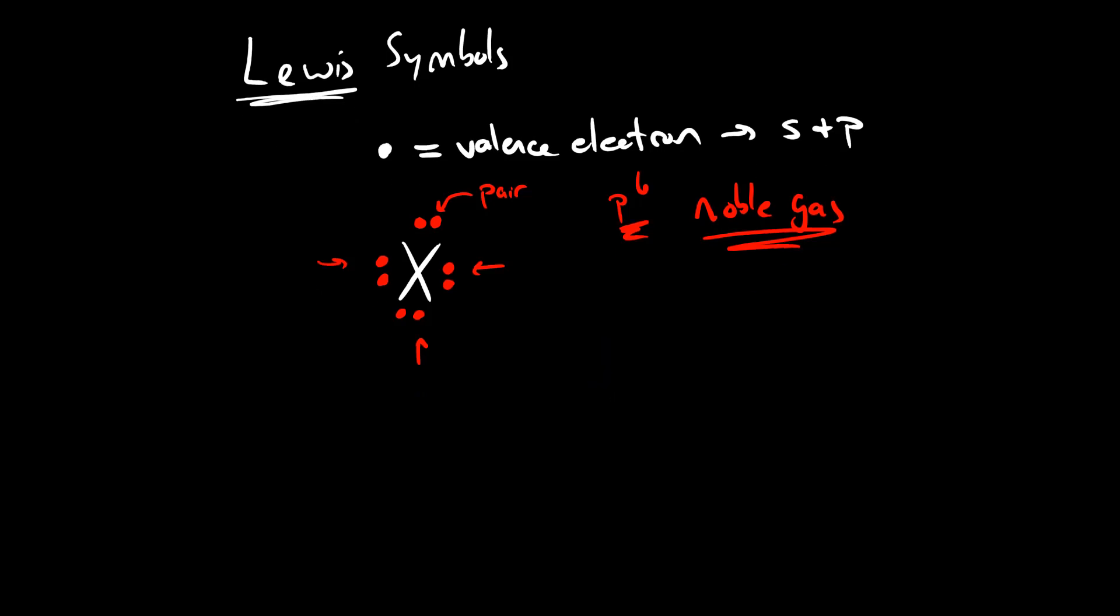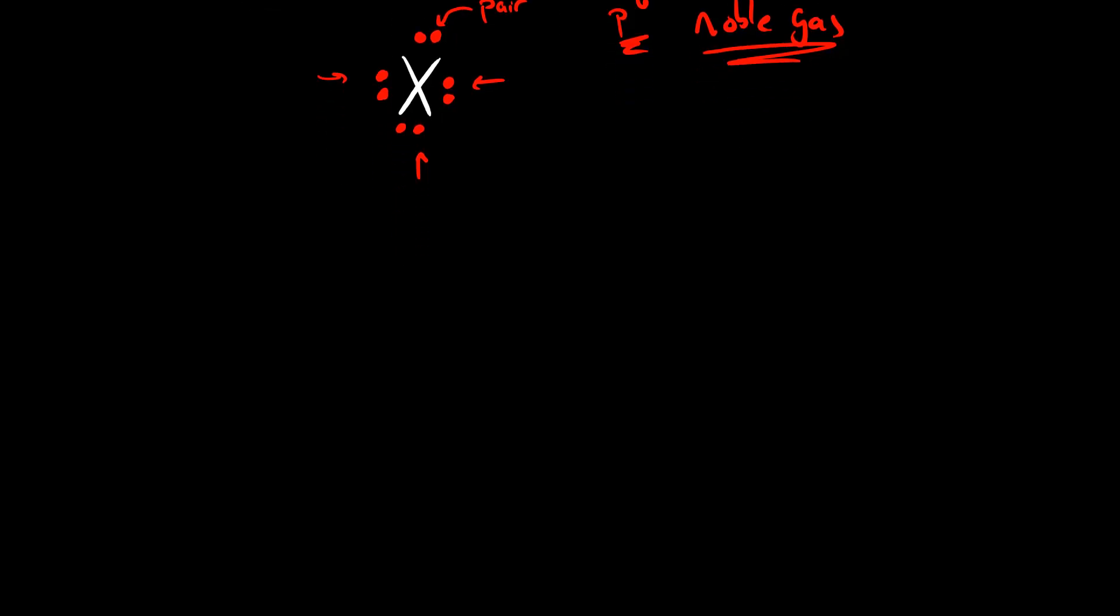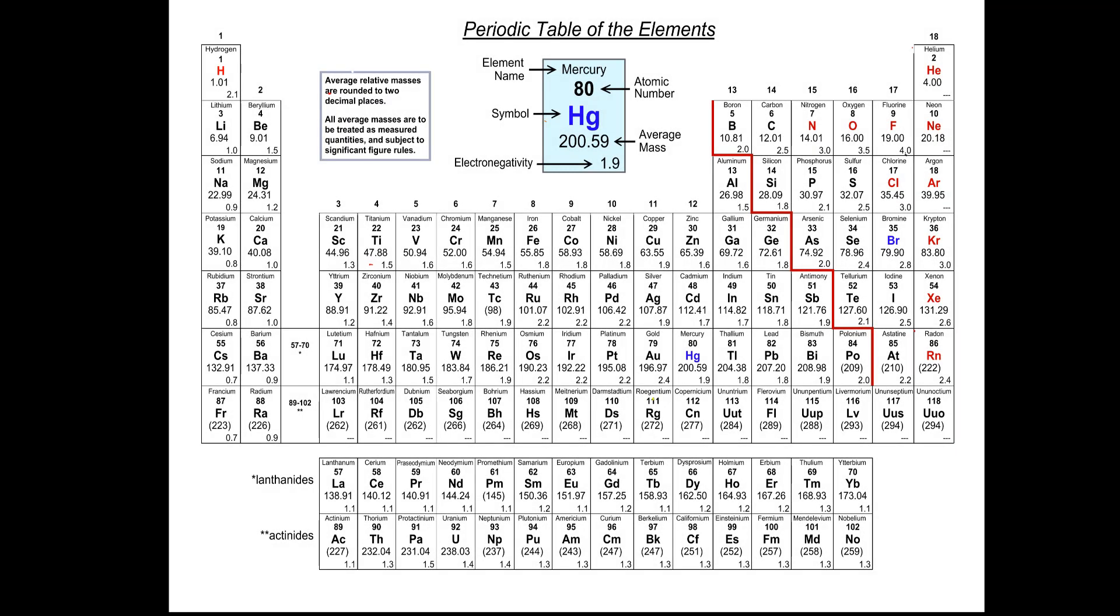All right, so let's just go through an exercise where we draw the Lewis symbols for all of our second row elements. So to do this, I'm going to go ahead and switch to the periodic table. Let's start with lithium. Lithium is in the first column, meaning it has one valence electron. So lithium's Lewis symbol would be the element symbol with one dot.